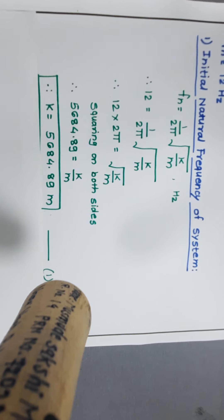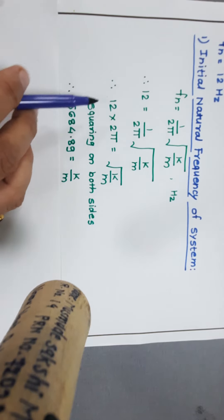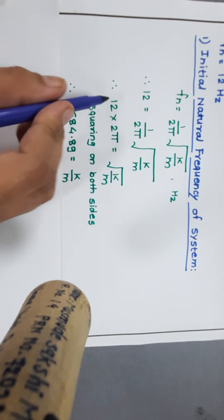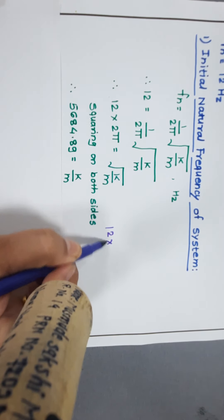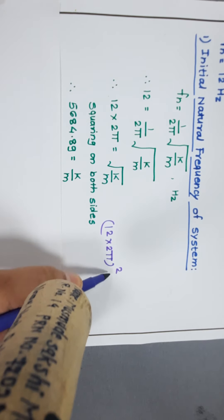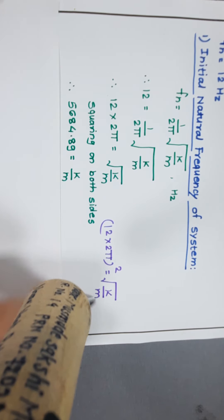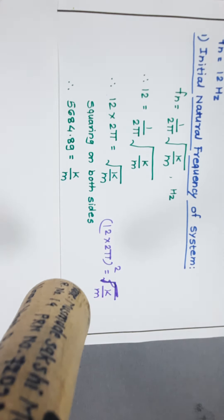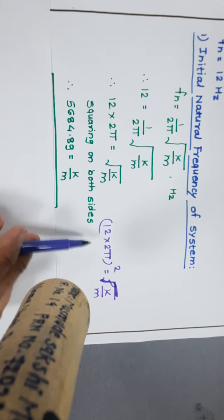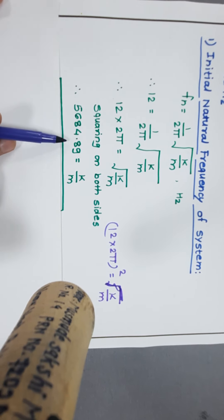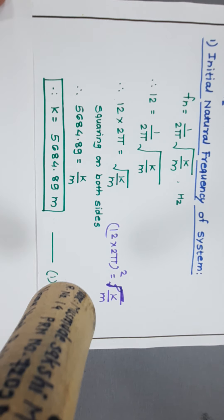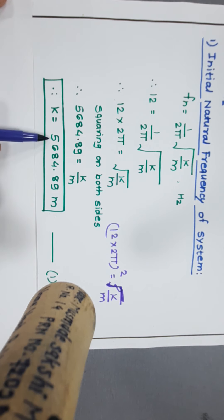Squaring both sides, we get (12 × 2π)² = k/m. Solving this bracket, (12 × 2π)² = 5684.89, so k/m = 5684.89. Therefore, the value of stiffness k = 5684.89 × m. This is equation number 1.